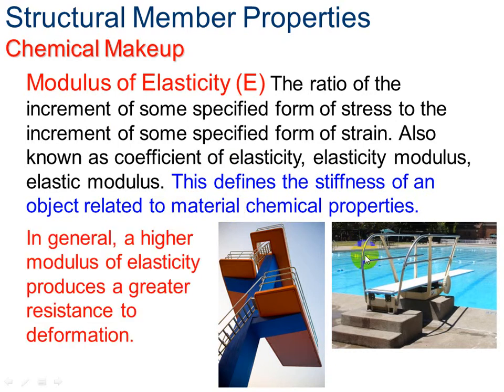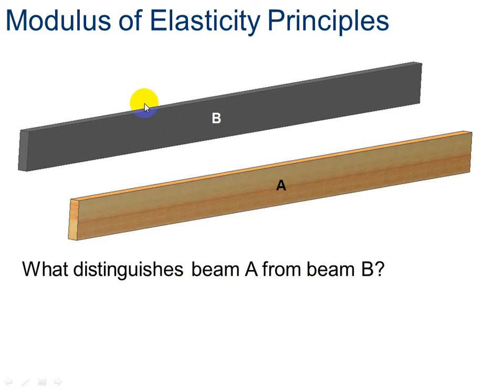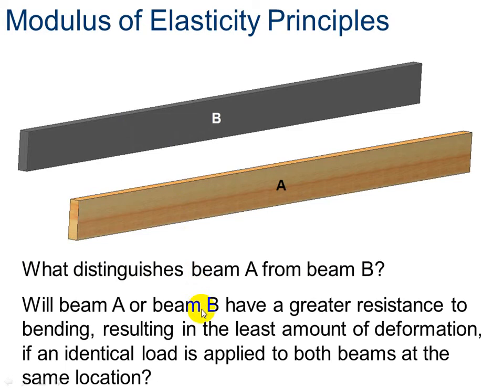A higher modulus of elasticity produces a greater resistance to deformation. The higher the number, the more likely we are to resist deformation. So modulus of elasticity, let's look at this. We have beam A here and beam B, the same orientation. Beam A is made from Douglas fir and beam B is made from ABS plastic. So what distinguishes them from each other? It's not their orientation this time. It is what they're made of.